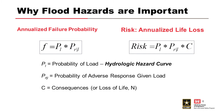Here's the math. The probability of loading, P sub L, factors prominently in both equations. On the left we have the annualized failure probability, and on the right we have our risk equation for USACE — the annualized life loss. We get that probability of loading from our hydrologic hazard curve. There are three terms that are pretty synonymous: hydrologic hazard curve, hydrologic loading curve, and stage frequency curve — all meaning the exact same thing.